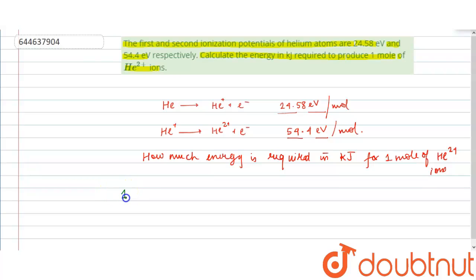Conversion factor here is 1 electron volt per mole equals 96.5 kilojoule per mole. This is the conversion factor.